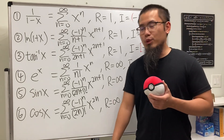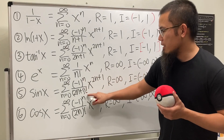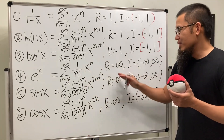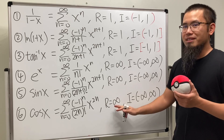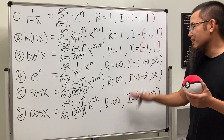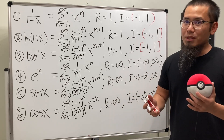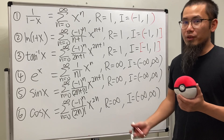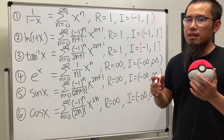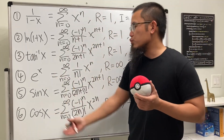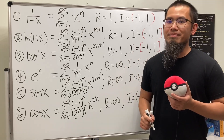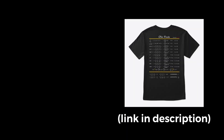One easy way to remember: when you see factorials in the denominator, that's a good hint that R is infinity. That's how I remember the power series for all these functions. Hopefully this helps. If you want to see where these formulas come from in detail, check out my other videos — then you can pass Calculus 2, I know you can!